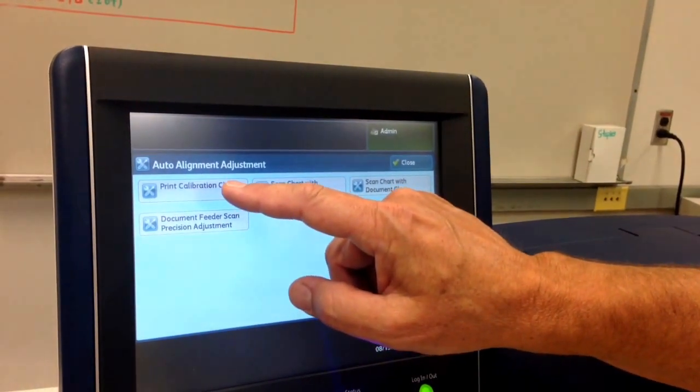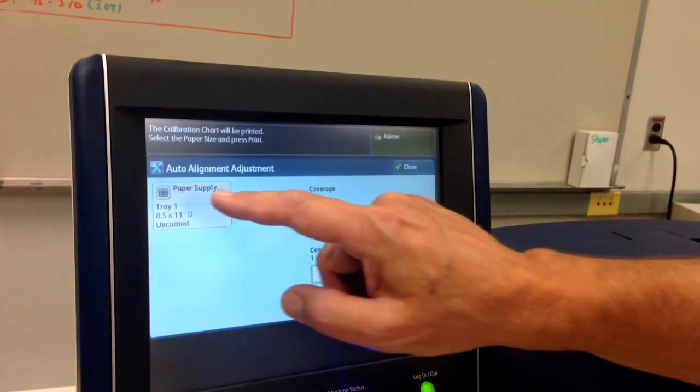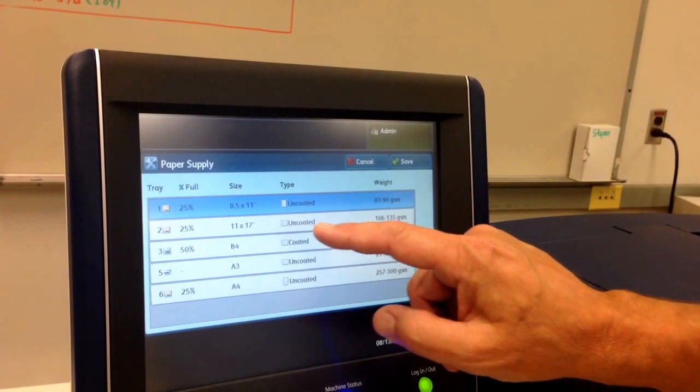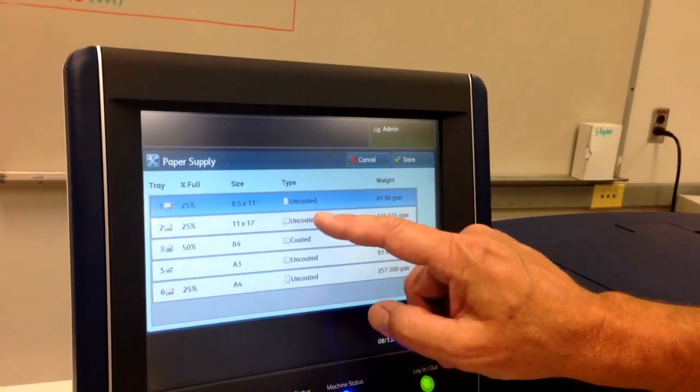What we want to do is print a calibration chart. We're going to select the sheet that we want to create an alignment for. In this case 1117 and Tray 2.